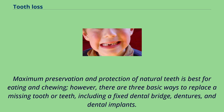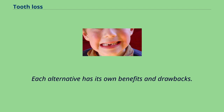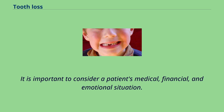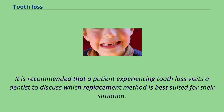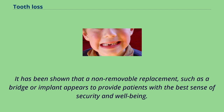Maximum preservation and protection of natural teeth is best for eating and chewing. However, there are three basic ways to replace a missing tooth or teeth, including a fixed dental bridge, dentures, and dental implants. Each alternative has its own benefits and drawbacks. It is important to consider a patient's medical, financial, and emotional situation. It is recommended that a patient experiencing tooth loss visits a dentist to discuss which replacement method is best suited for their situation. Research has shown that a non-removable replacement, such as a bridge or implant, appears to provide patients with the best sense of security and well-being.